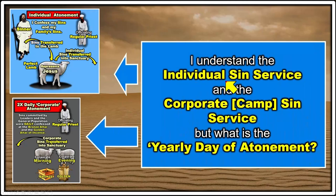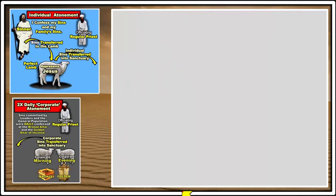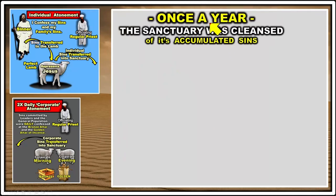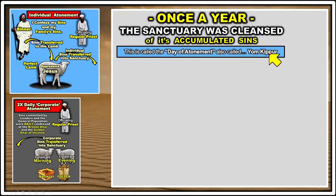You might understand the individual sin service and the corporate or camp sin service from the prior videos, but what is this yearly Day of Atonement? That's what we're going to cover right now. The yearly Day of Atonement occurs once a year — the sanctuary was cleansed of the accumulated sins, both individual atonement sins and corporate sins. Once a year the sanctuary was symbolically cleaned of these sins. It is also called Yom Kippur in modern-day vernacular.